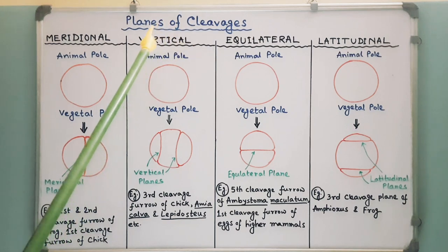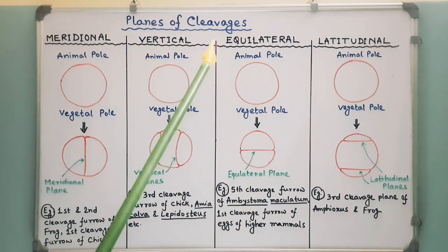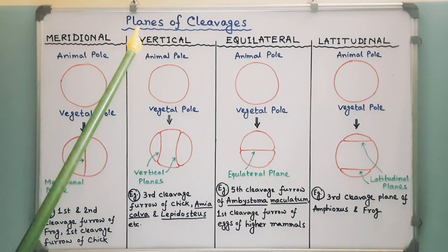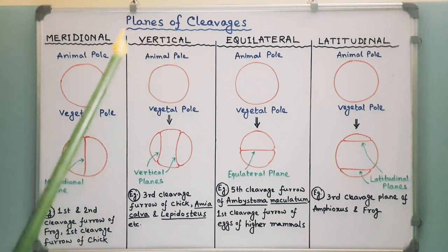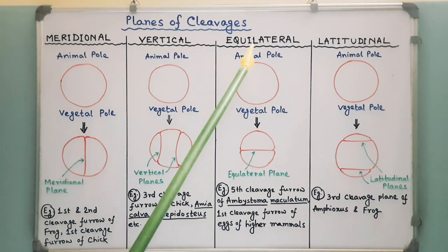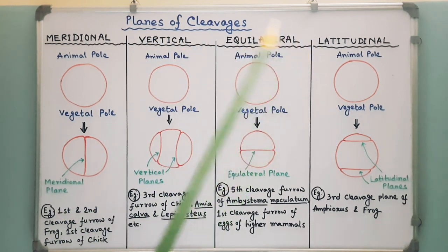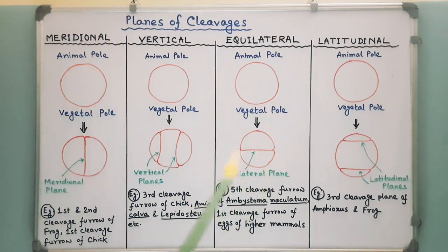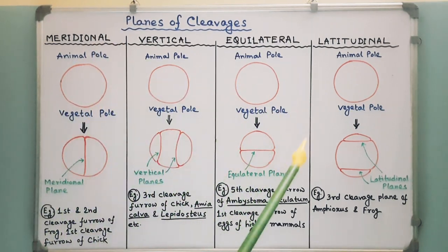I will discuss different planes of cleavage furrows. There are mainly four cleavage planes: meridional plane, vertical plane, equilateral plane, and latitudinal plane. Through these diagrams, I tried to explain the planes of cleavage.